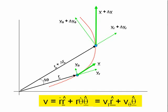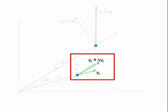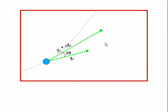Let us consider the radial component of the velocity first. The radial component of the velocity at point a is vr, and the radial component at point b is vr plus the change in vr, delta-vr. We can slide the vector at b down to join the tail of the vector at a and magnify the diagram. The change in vr — that is, the vector delta-vr — has both a radial and a tangential component.